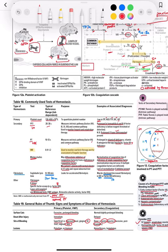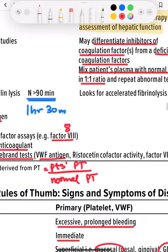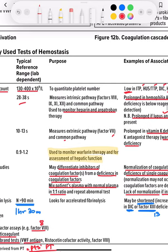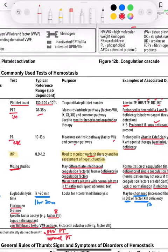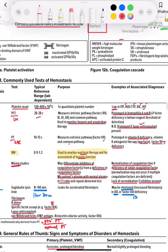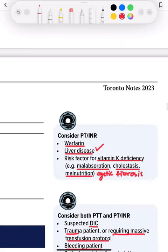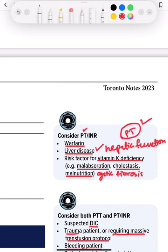INR is basically the ratio between the patient's prothrombin time and the normal prothrombin time. INR is used to monitor warfarin therapy and for assessment of hepatic — liver — function. PT and INR are considered when we have to monitor warfarin, liver disease, and risk factors for vitamin K deficiency such as malabsorption, cholestasis, malnutrition, and cystic fibrosis.